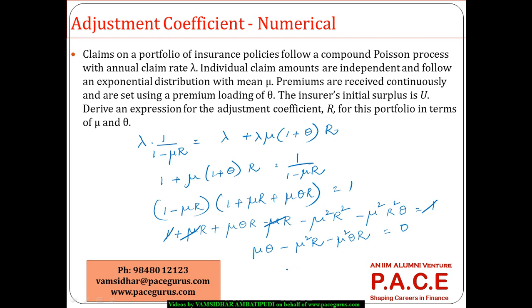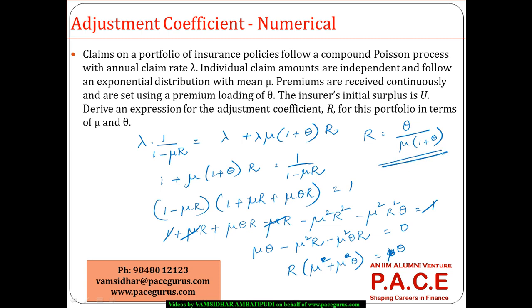Taking r to the other side: r times (mu² + mu²*theta) equals mu*theta. Factoring out mu gives r equals theta divided by mu*(1 + theta). This is the adjustment coefficient r for a compound Poisson process with exponential claims and premium loading theta.